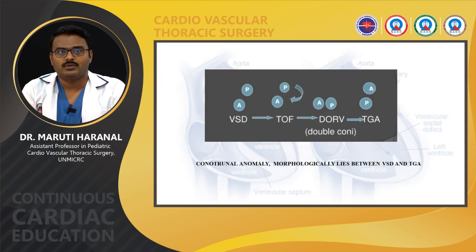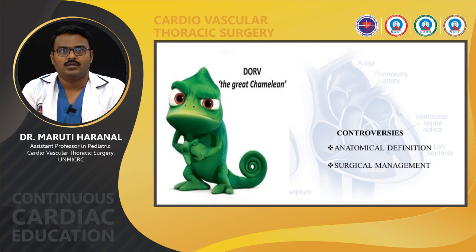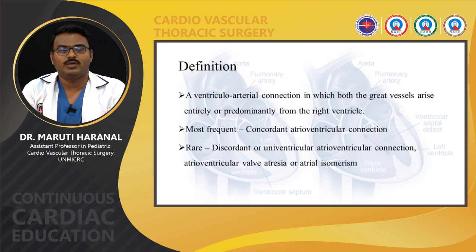DORV is considered one of the conotruncal anomalies. Morphologically it lies between the VSD and TGA. DORV is akin to the great chameleon because a lot of controversies exist in its anatomical definition and surgical management. The general definition is a ventriculo-arterial connection in which both great arteries arise entirely or predominantly from the right ventricle. More frequently it is associated with concordant atrioventricular connection. Rarely we can see discordant or univentricular atrioventricular connection, atrioventricular valve atresia, or atrial isomerism.